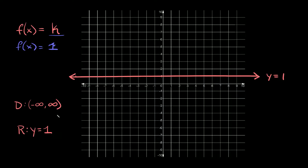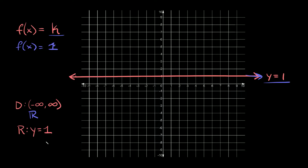The domain and range for a constant function: the domain goes from negative infinity to positive infinity, or another way to say this is all real numbers. The range is our vertical limits — we're basically stuck on this line at y is equal to one, so the range is just y is equal to one.